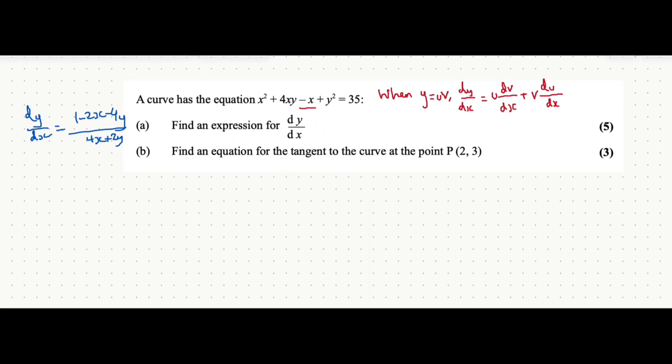It says find an equation for the tangent to the curve at this specific point. So just a quick reminder what a tangent is. If you have a random curve, so it says at the point (2,3), this might not be accurate for this specific curve, but let's say this is the point (2,3). What a tangent is at that point is, it's a line that crosses the curve and it has the same gradient of the curve at that point. And it's a straight line. Because it is a straight line, that means it's in the form y equals mx plus c.